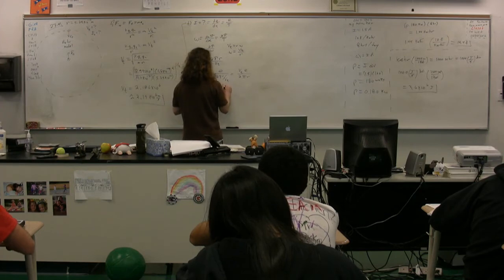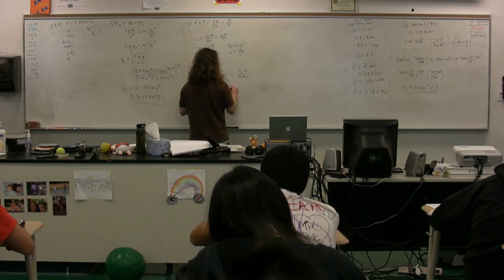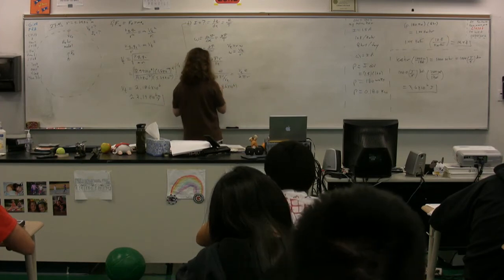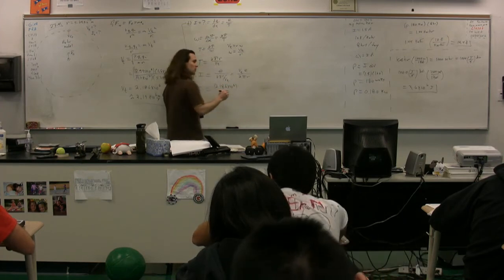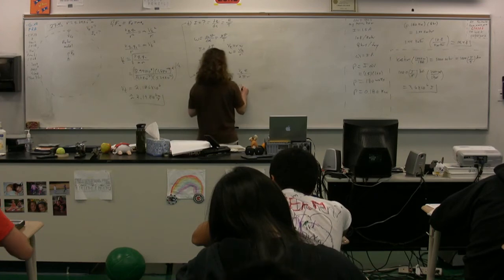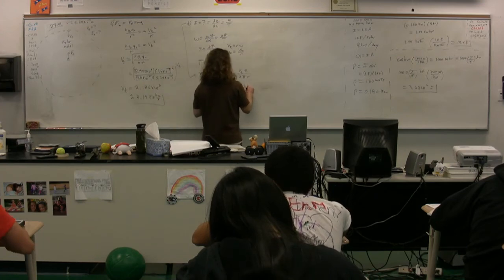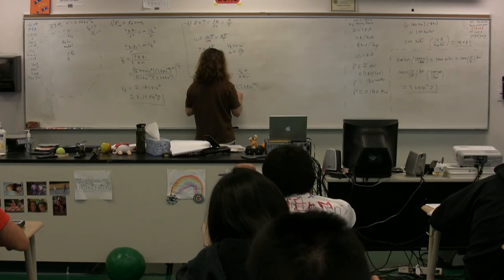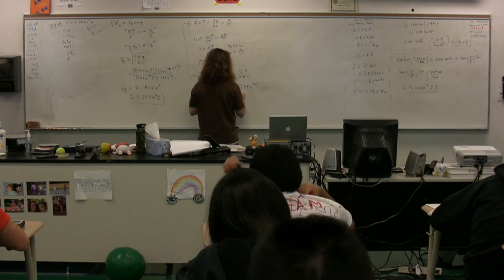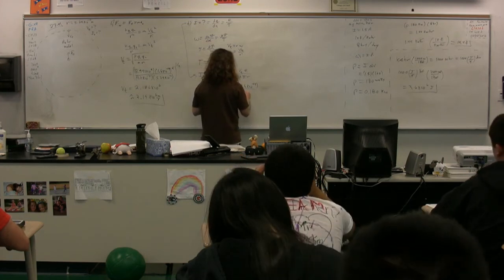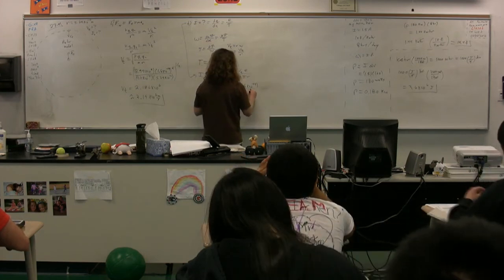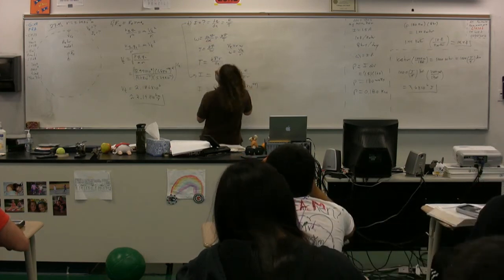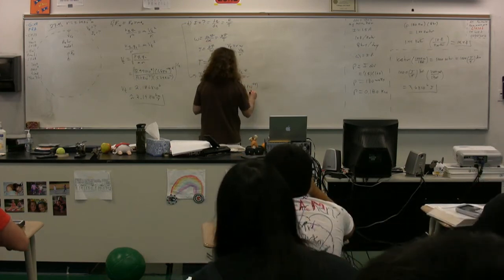2.186 times 10 to the 6th multiplied by 1.6 times 10 to the negative 19, divided by 2π times 5.29 times 10 to the negative 11th.